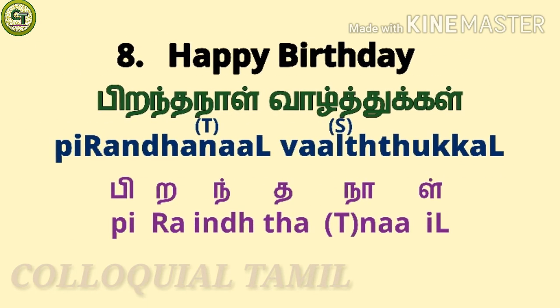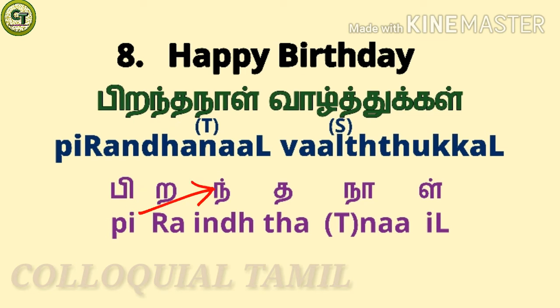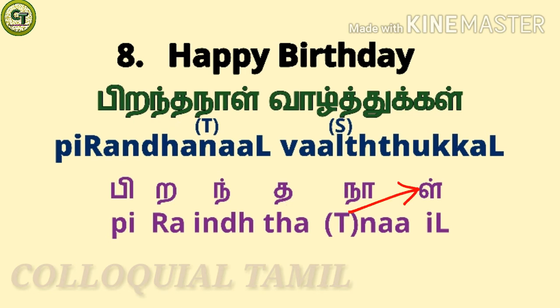For 'happy birthday,' say peranthanal vaal thukkal. You already know vaal thukkal. For peranthanal: 'p' is a short sound letter, 'ra' is a short sound letter said with stress, 'ind' is a consonant, 'th' is a short sound letter, 'na' is a long sound letter — the tip of your tongue touches the back of your teeth — then big 'il.' Together: peranthanal vaal thukkal.